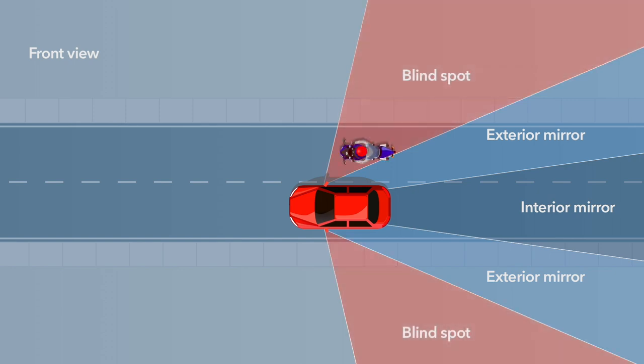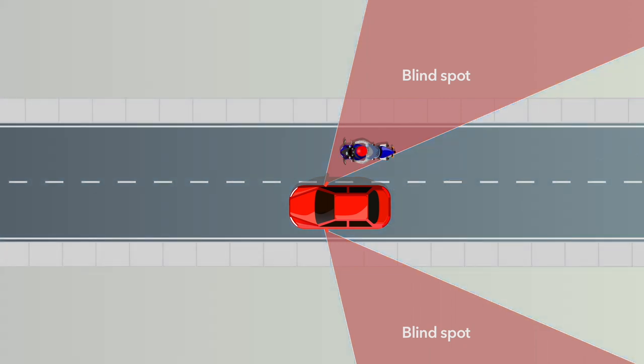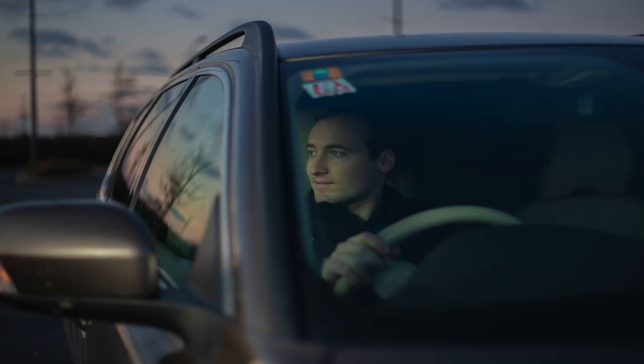Another road user may be hidden out of sight in the blind spots. To see potential road users in your blind spots, you need to look over your shoulder.